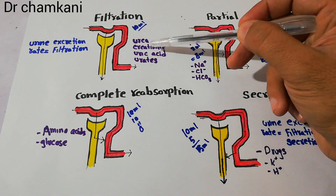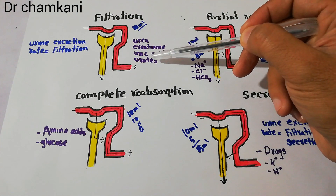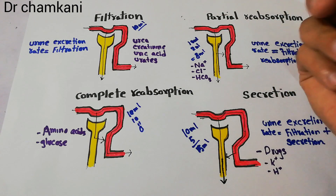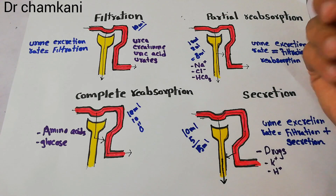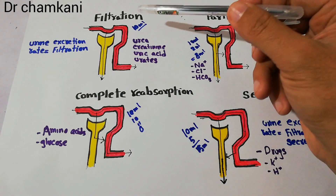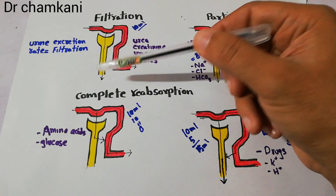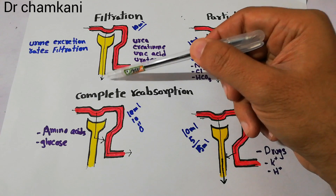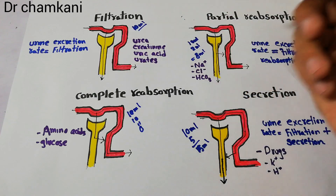Urea, creatinine, uric acid, and urates are basically end metabolic products. They are not needed in the body, so they are excreted out of the body in the form of urine.